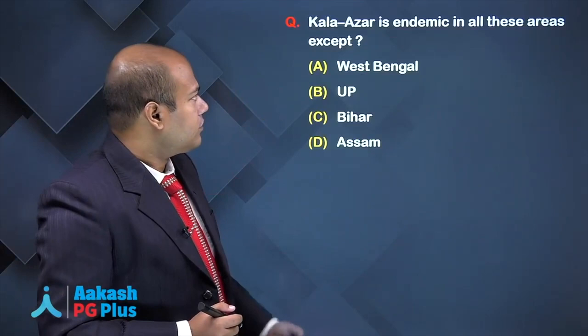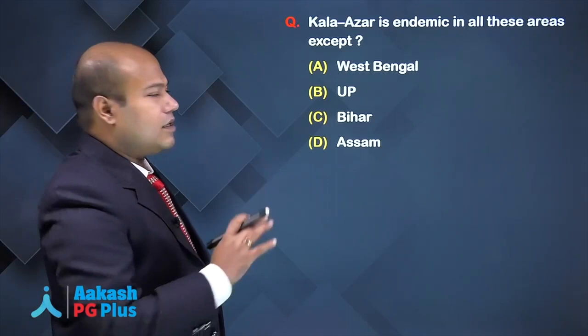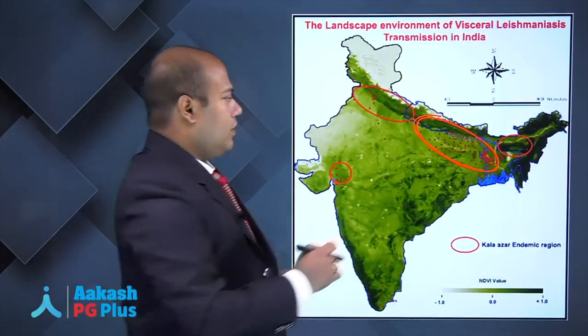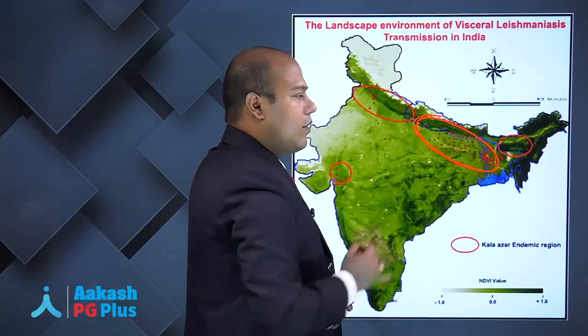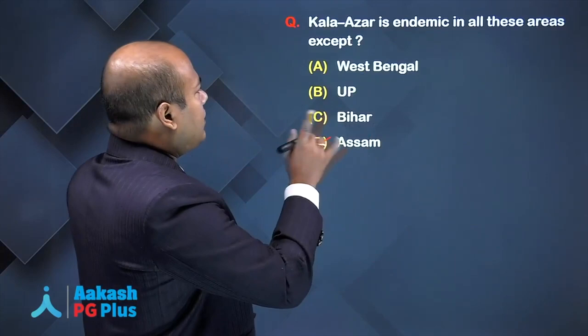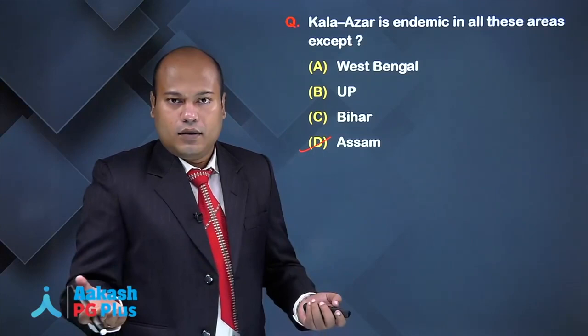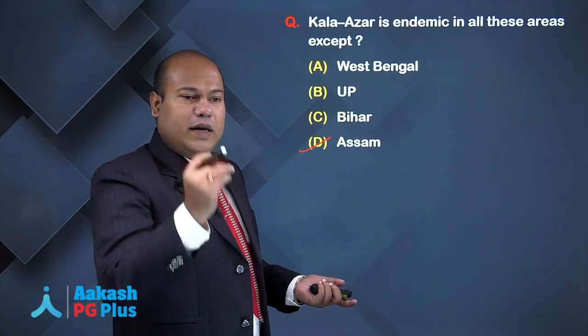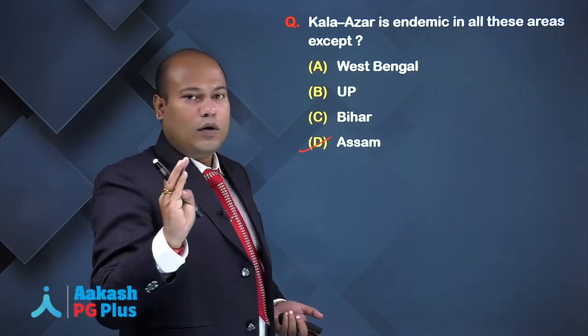Question: Kalazar is endemic in all these areas except? The endemic areas include eastern Uttar Pradesh, Jharkhand, Bihar, and West Bengal. The answer is Assam — Kalazar is not endemic in Assam because the sandfly is not abundant there. Kalazar will be endemic only where sandfly is abundant: UP, Bengal, Bihar, and Jharkhand.